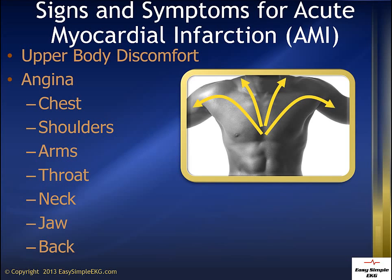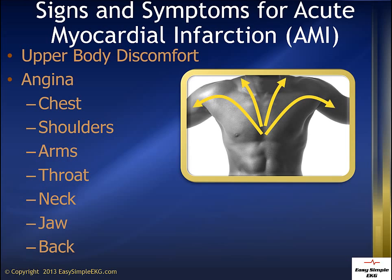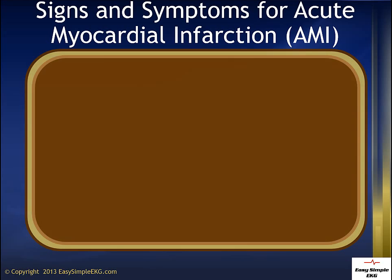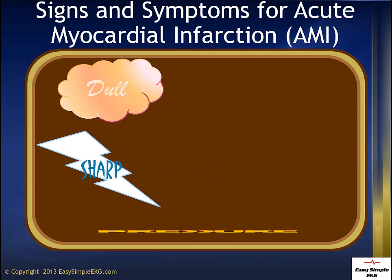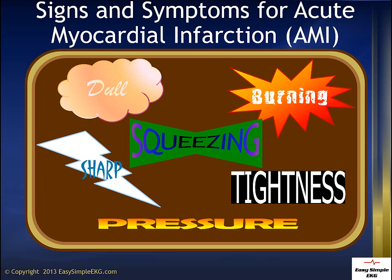The signs and symptoms of an AMI should begin with chest or upper body discomfort. Angina can be in the chest. It can radiate to one or both shoulders, into one or both arms. It can radiate up into the throat, neck, or jaw area. It can radiate into the back. This chest or upper body discomfort can be dull, sharp, pressure, burning, tightness, or squeezing.